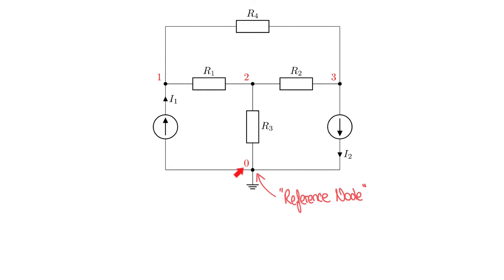The other nodes are numbered one, two, and three, and these voltages are the unknown voltages. So we started with four nodes but now really only have three unknowns, because we begin with the assumption that our reference node is at zero volts. One other thing to notice is that in our examples we'll see constant current sources rather than the constant voltage sources we saw in mesh analysis.